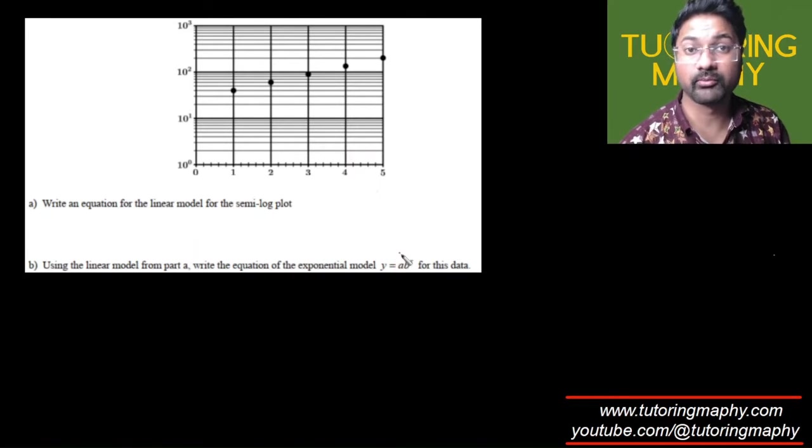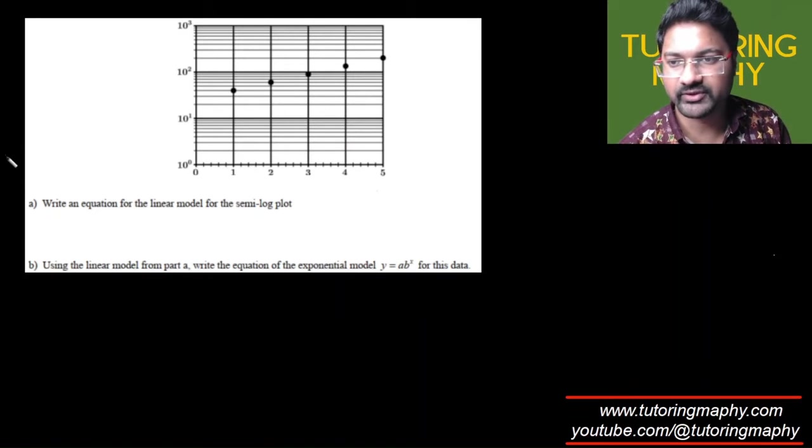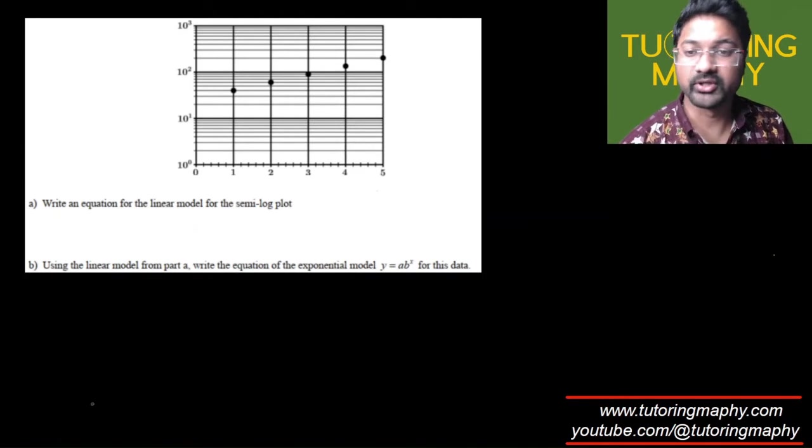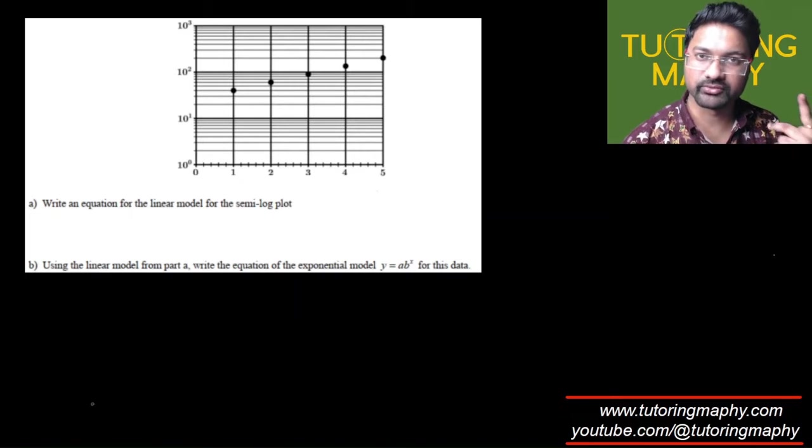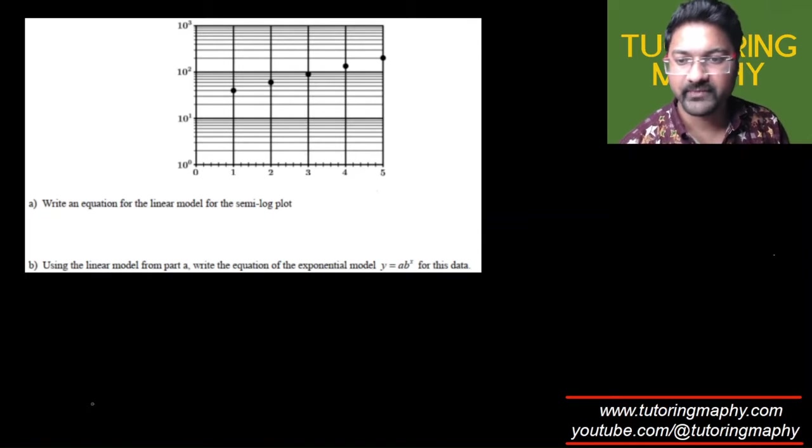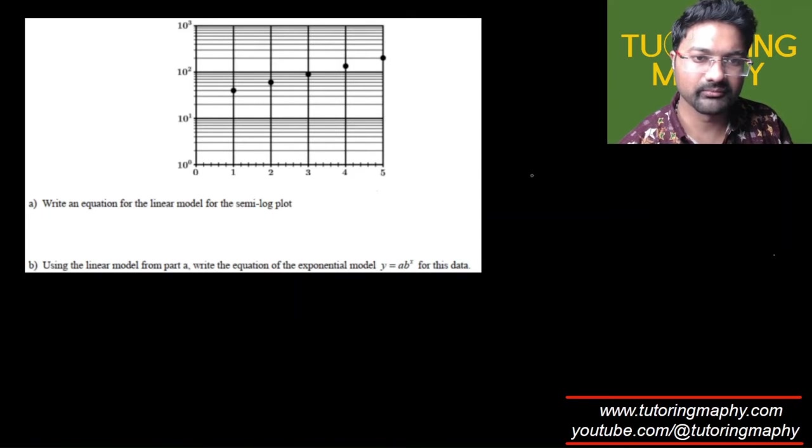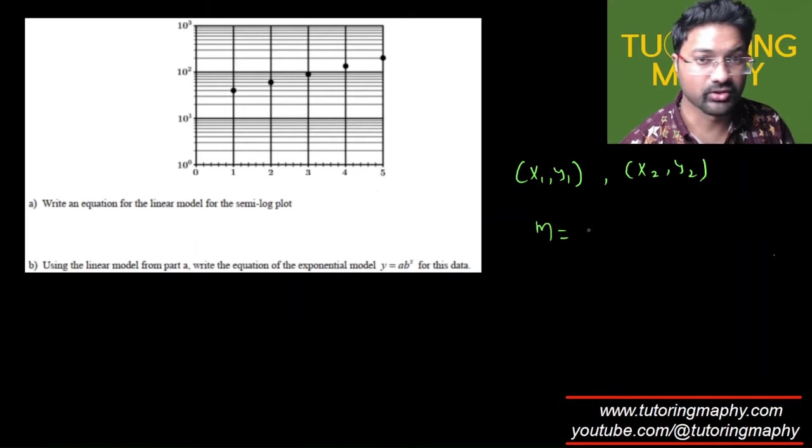Okay, first things first: how to find the slope. Because linear model has two things, right? Y-intercept and the slope. First I'm going to give you a formula for the slope. First we'll consider any two points on this curve, maybe (x₁, y₁) and (x₂, y₂). So the slope is going to be not the rise over run, not the simple rise over run, because remember the y-axis has been logarithmically scaled.